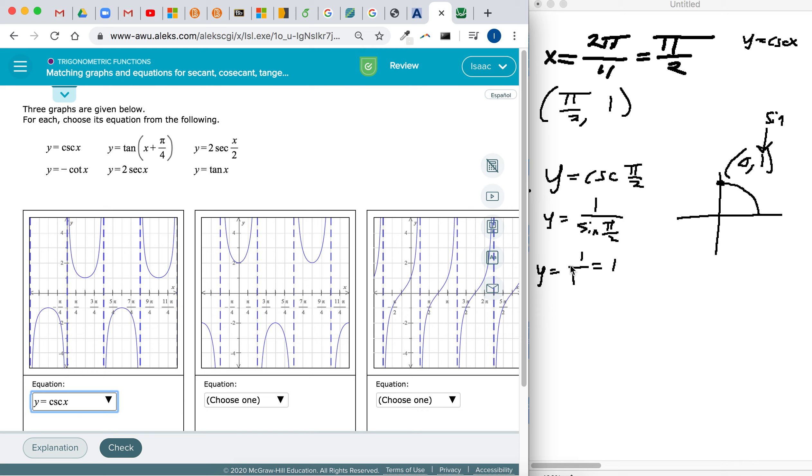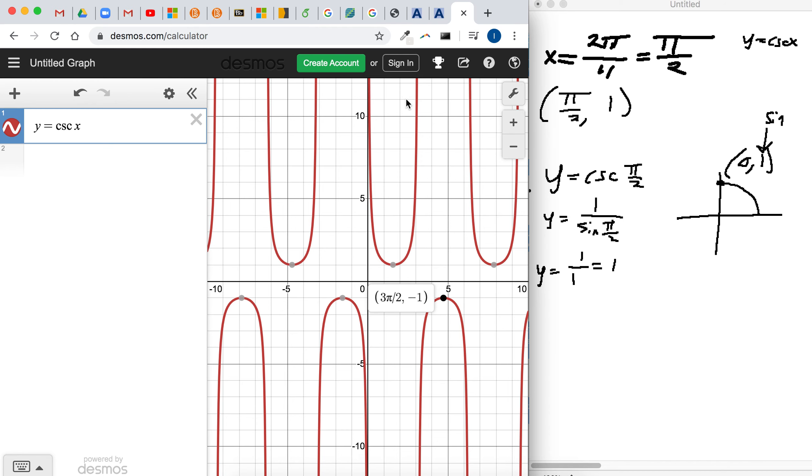And again, we got that from testing a point. We got lucky, we plugged in π/2, because we saw in the graph if you plug in x equals π/2, it should spit out 1 for y. But you can also do it by using one of these graphing calculators.